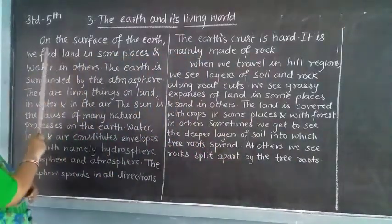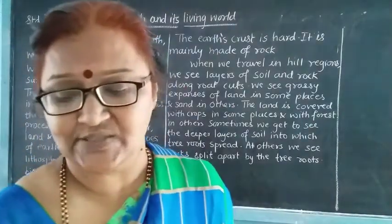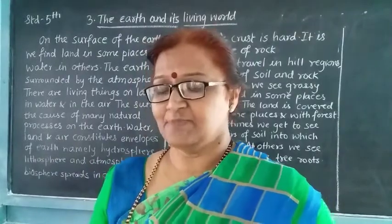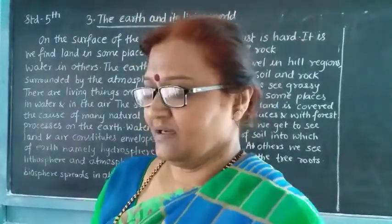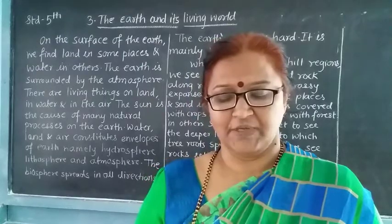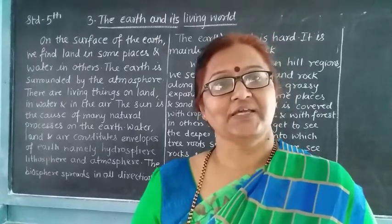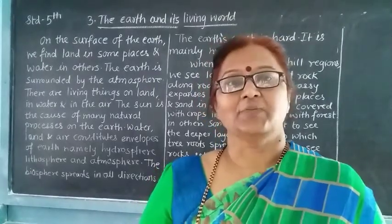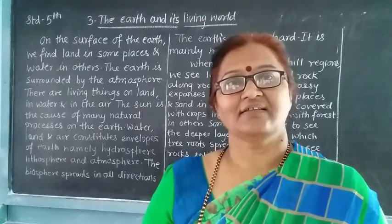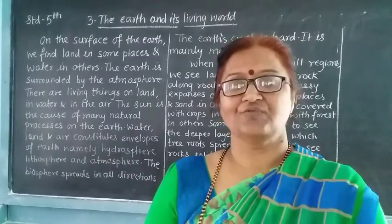On the surface of the earth, see in your textbook — there is a figure showing the spheres of the earth: lithosphere, hydrosphere, atmosphere, and biosphere. Lithosphere means the sphere where land exists. Hydrosphere means the sphere where water exists. Atmosphere is where air exists. And biosphere means where life exists.